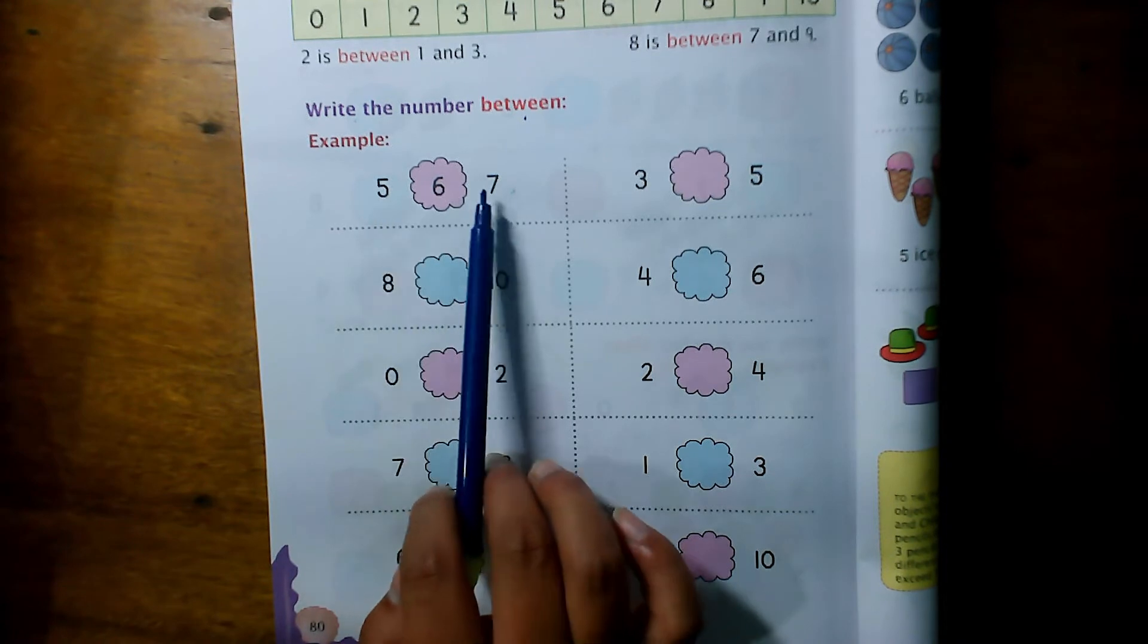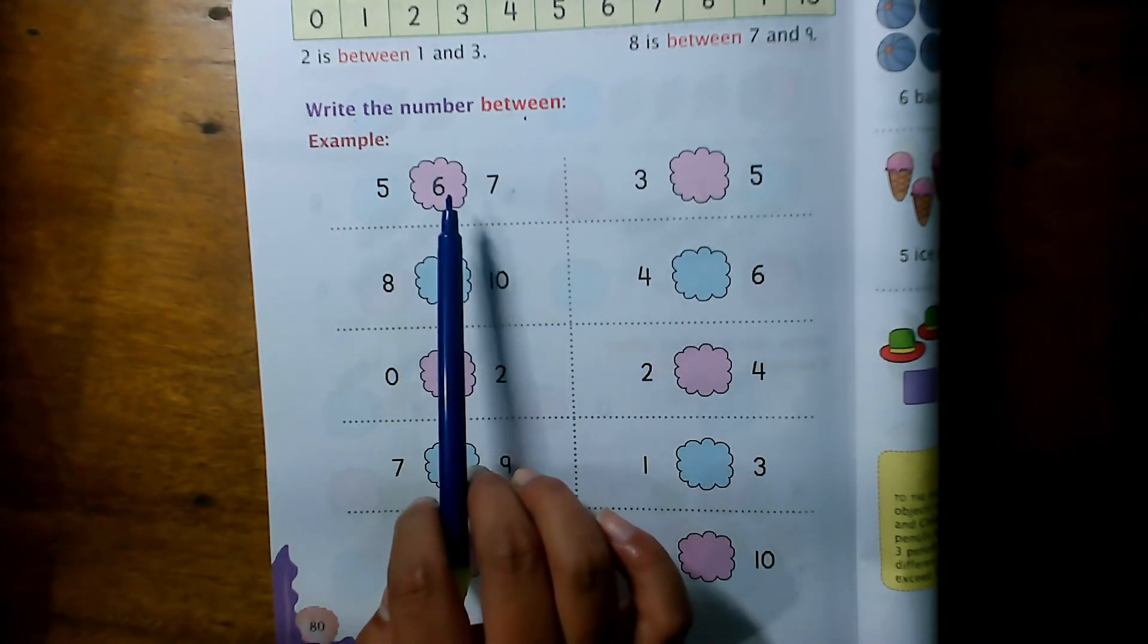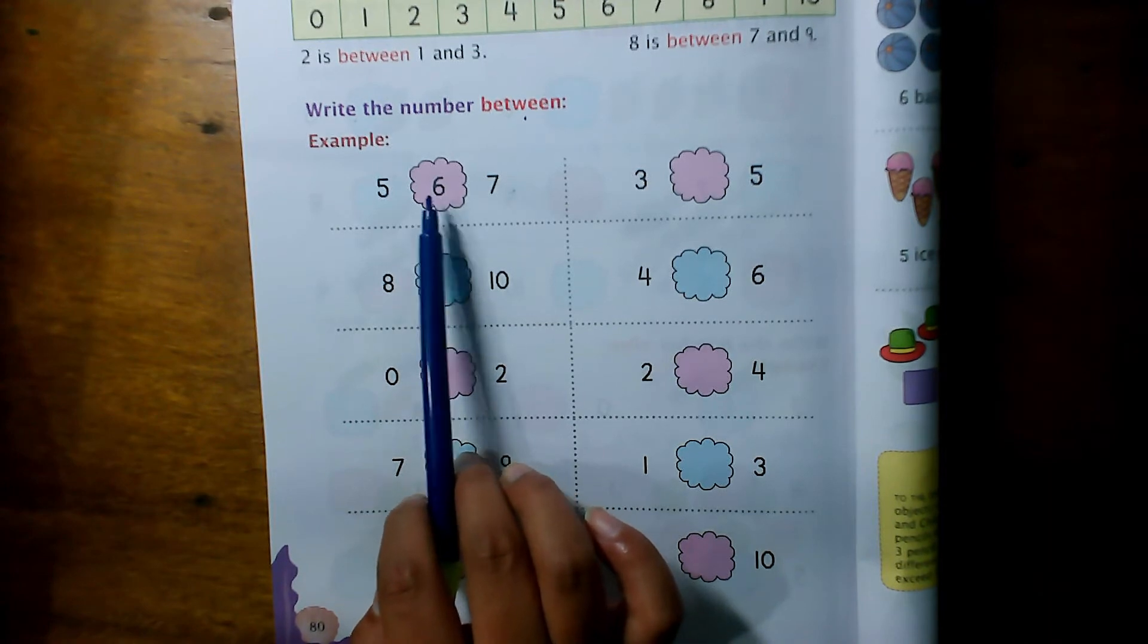what comes between five and seven? Number six. Six, five, six, seven. So six is in between of five and seven.